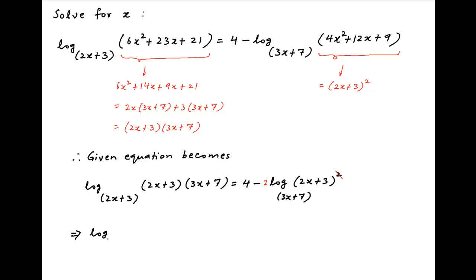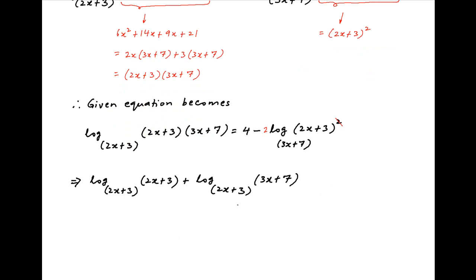Again using properties of logarithms, the left hand side is equal to log of (2x plus 3) to the base (2x plus 3) plus log of (3x plus 7) to the base (2x plus 3), and this is equal to the right hand side which is 4 minus log of (2x plus 3) to the base (3x plus 7).